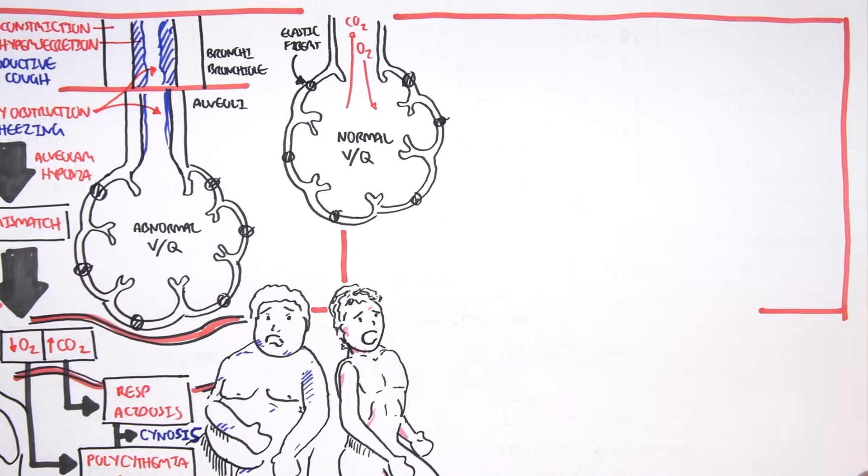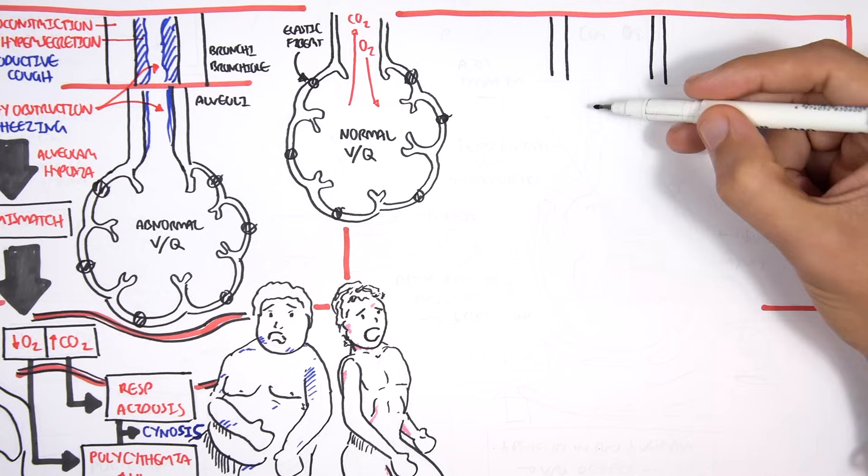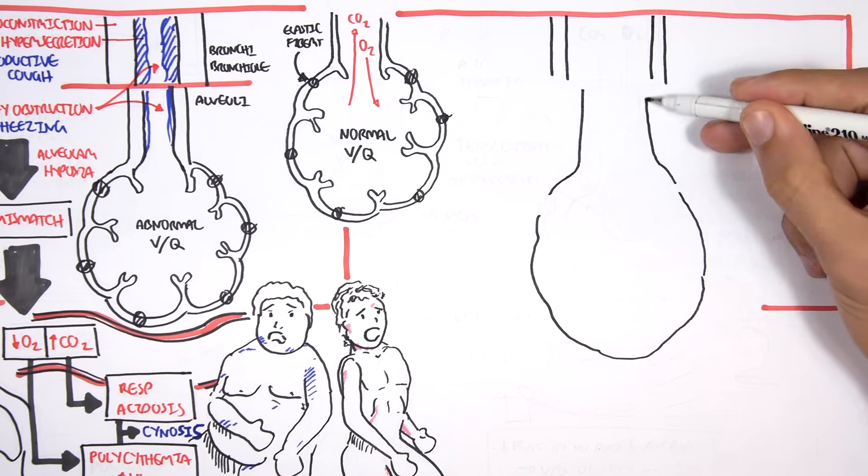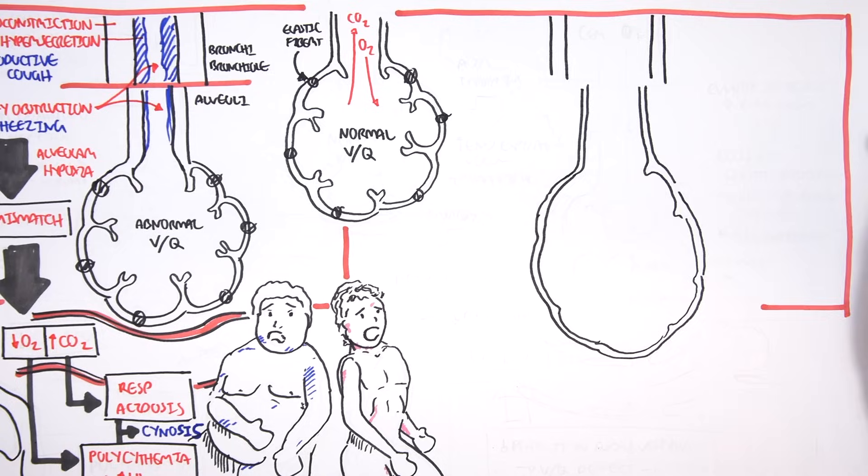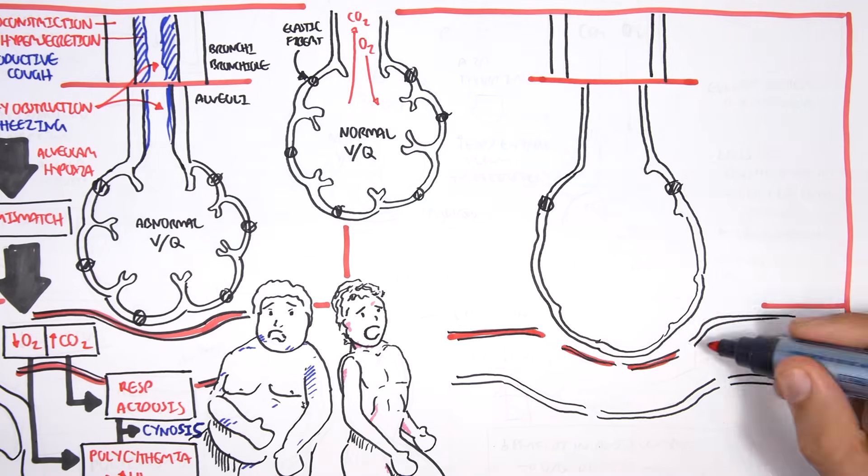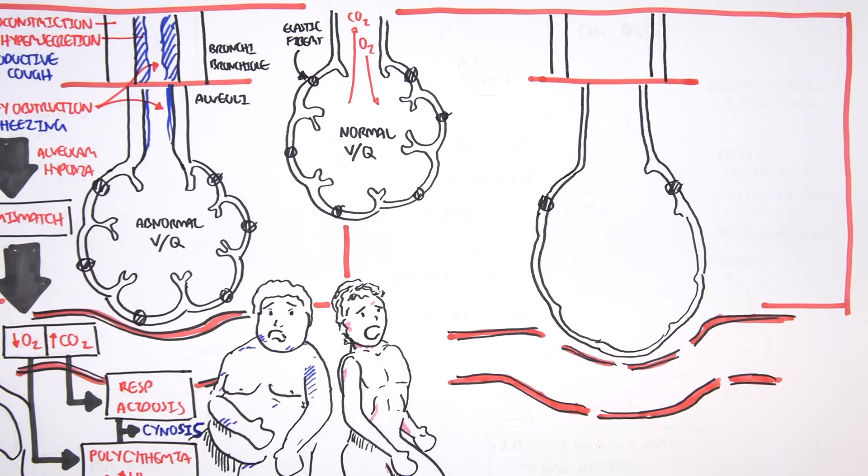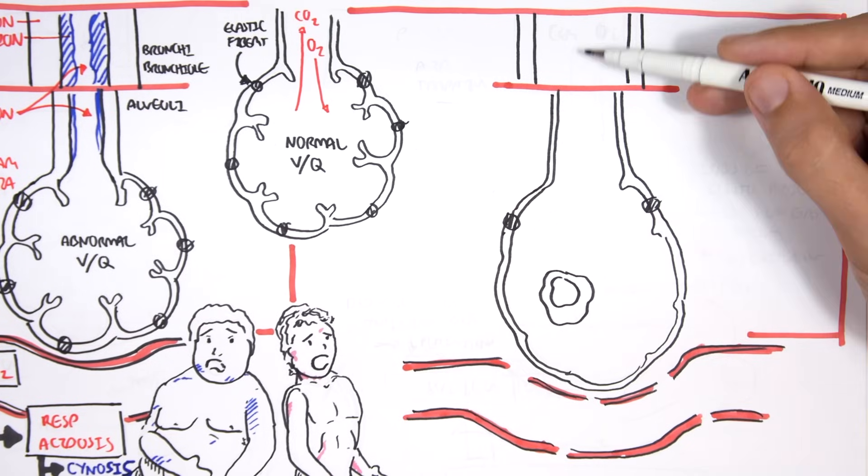If that did not make sense, we'll look at it in a diagram. Let's draw the same diagram as before with the bronchiole and the alveolus here, and its pulmonary supply. Within the alveolus, there are macrophages normally residing in there, helping to keep the place clean and sterile. Normally, oxygen comes in and carbon dioxide goes out.